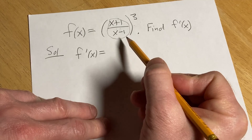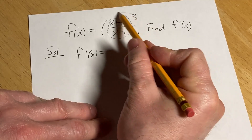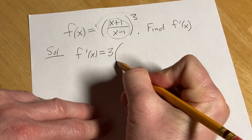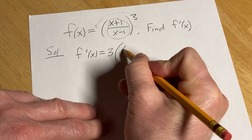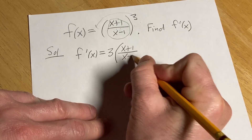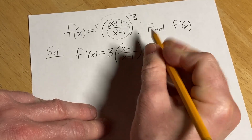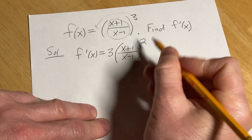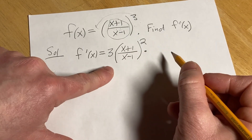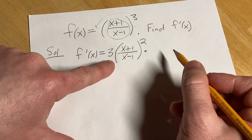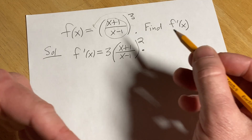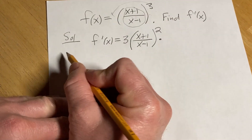Taking the derivative of the outside, we bring down the 3, leave the inside untouched — so x plus 1 over x minus 1 — subtract 1 from the exponent, then times the derivative of the inside. For this inside derivative, we have to use something called the quotient rule.